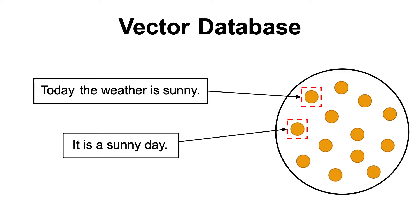For instance, if we have the following two sentences: today the weather is sunny, and it's a sunny day, they are quite similar, and the two vectors representing them should be close to each other.